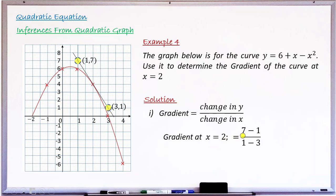Now calculate: gradient = (y₁ − y₂) / (x₁ − x₂) = (7 − 1) / (1 − 3) = 6 / (−2) = −3. So the gradient of the curve at x = 2 is −3.